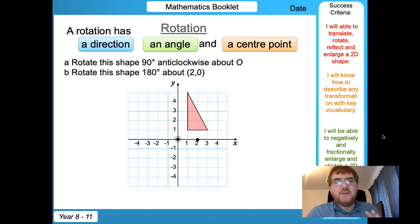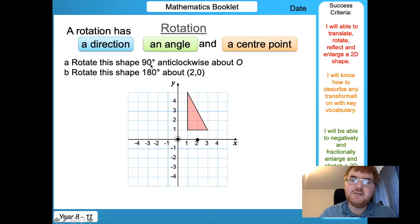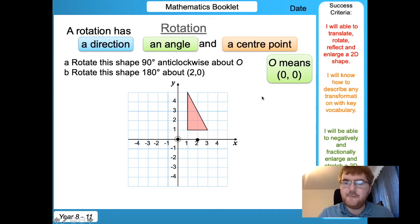So let me go through these two examples and you can try one by yourself. We want to rotate this shape here 90 degrees anticlockwise about zero. Now this is called the origin, which is the point (0,0), right in the middle.